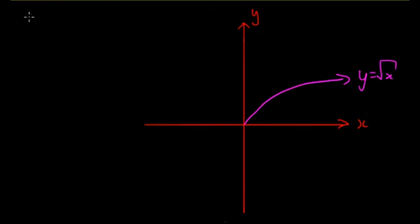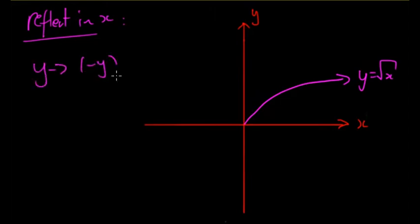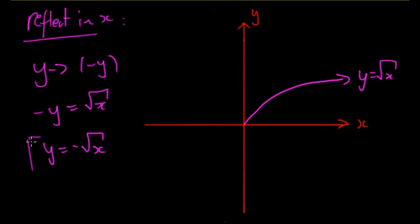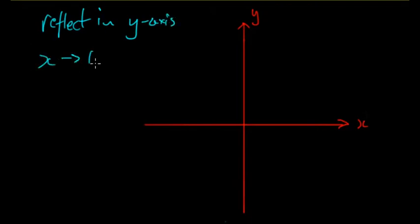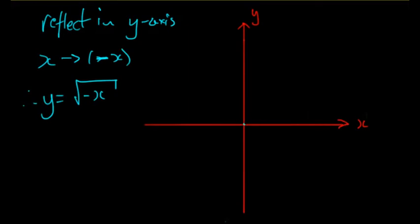Now for reflections. First, reflecting in the x-axis: we replace y with negative y. So y equals the square root of x becomes negative y equals the square root of x, which gives y equals negative square root of x. The graph is the same shape but all y values are now negative. The endpoint stays at zero zero, but the graph goes downward.